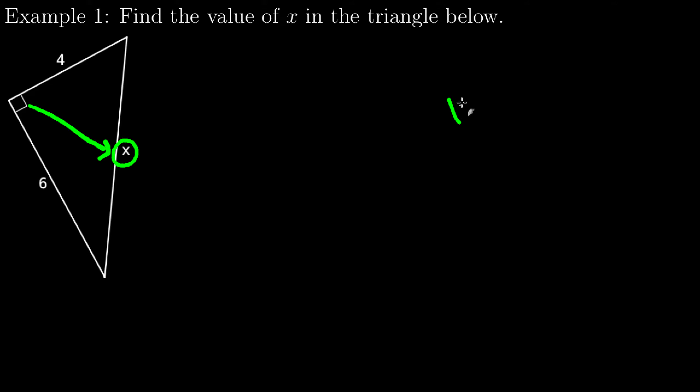So c is going to be x. And the Pythagorean theorem you'll recall said a squared plus b squared equals c squared. So a and b could be 4 or 6 in any order. So I'll do 4 squared plus 6 squared equals x squared.